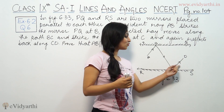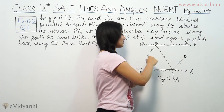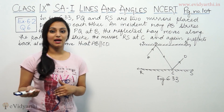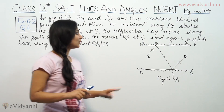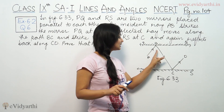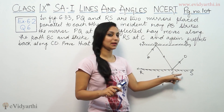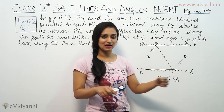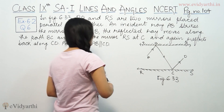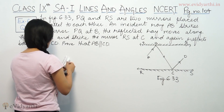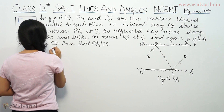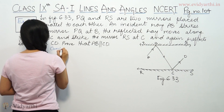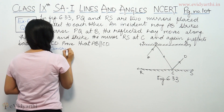If you see, it looks like a Z shape, but if you have to prove it, you have to prove that the alternate angles are equal. Then we can say that these lines are parallel. So it requires construction.